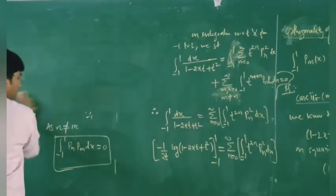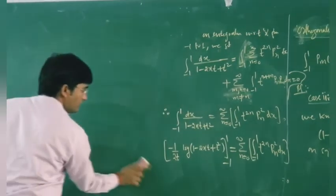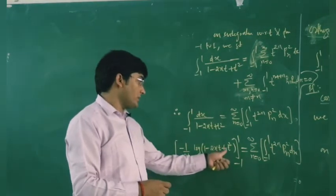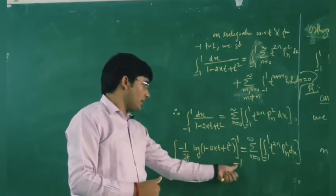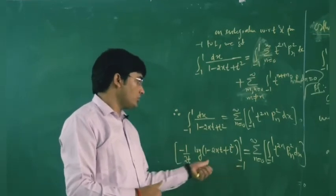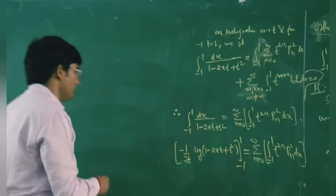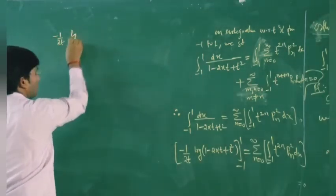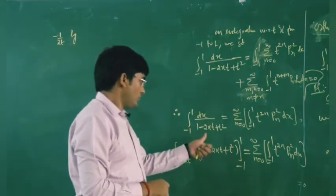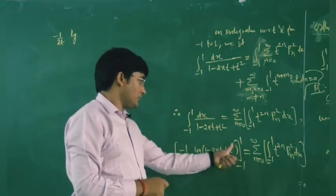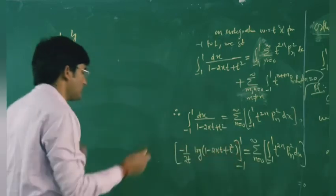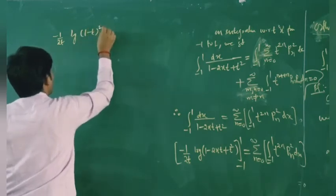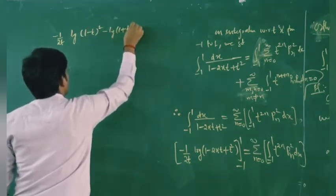Putting in the limits: for the upper limit x = 1, we get log(1 - t)², and for the lower limit x = -1, we get log(1 + t)². So the left-hand side becomes (-1/(2t)) times [log(1 - t)² - log(1 + t)²].